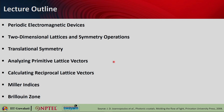Here is the lecture outline. Today we will have a look at periodic electromagnetic devices — why we are studying these topics and where the final objective is. We will go into technical details like two-dimensional lattices, study their symmetry operations, understand translational symmetry, analyze primitive lattice vectors, calculate reciprocal lattice vectors, obtain Miller indices, and discuss Brillouin zones.